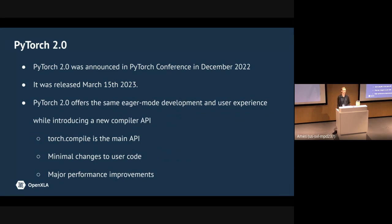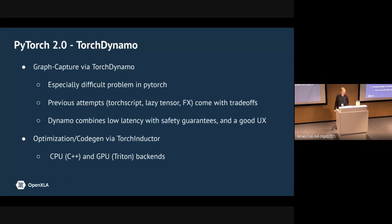Two main things went into making PyTorch 2 possible: one is a new way to capture a graph from PyTorch, and the other is a backend that can do something with the graph and make it faster. A lot of these ideas came from Jason Ansel's initial research into Torch Dynamo and Torch Inductor, plus a lot of work from the great PyTorch team.